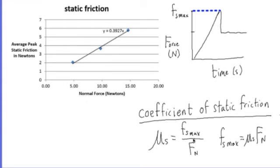And so the slope of that line is the ratio of the y-axis to the x-axis. So if F_s max is on the y-axis and the normal force is on the x-axis, that ratio is the slope, and I give that a name—I call it the coefficient of static friction. I can rearrange that equation to show that the maximum static frictional force is equal to the coefficient of static friction times the normal force.